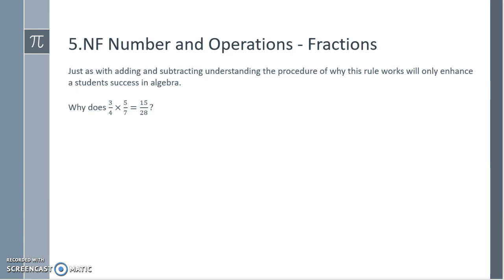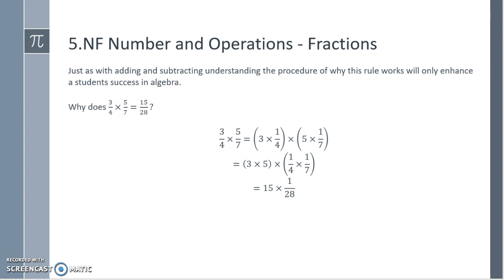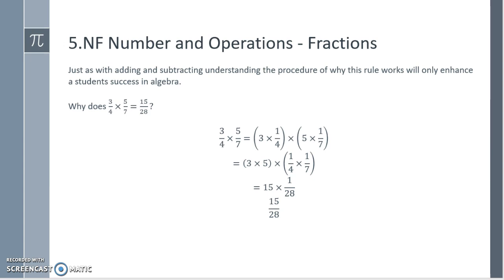So we'll go over why is 3 fourths times 5 sevenths, why is that 15 28ths? We can decompose the numbers: 3 copies of 1 fourth times 5 copies of 1 seventh. Using the associative and commutative property, I can rearrange these because it doesn't matter in which order we write multiplication. So 3 times 5 times the unit fractions, and we get 15 times 1 28th, which is the same as 15 28ths.